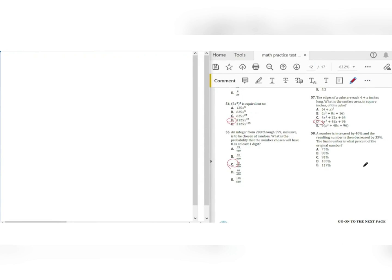Moving on to 58. A number is increased by 40%, and the resulting number is then decreased by 35%. The final number is what percent of the original number? Alright, let's assign an original number. Let's take 100. 100 is increased by 40%. So 40% of 100 is 40. Adding that to 100, we get 140. Now we're going to decrease this by 35%. So we have to find 35% of 140. And we get 49. So 140 minus 49 is 91. Now all we have to do is figure out 91 divided by 100. That's going to be 0.91 or 91%.